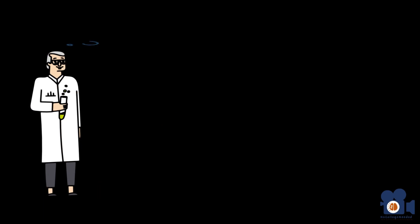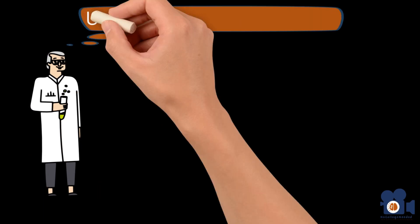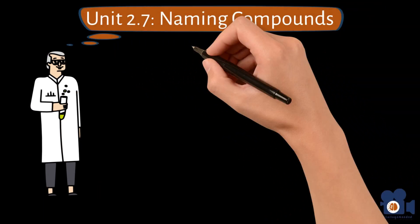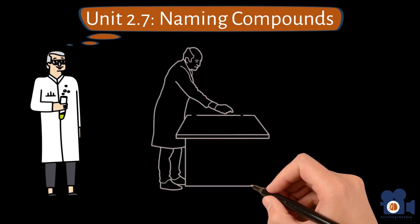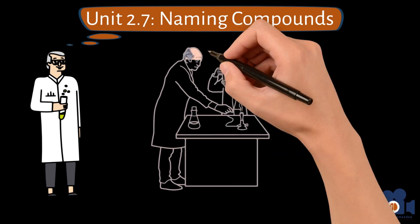Today we're delving into Unit 2.7 of the first half of general chemistry, which goes over naming compounds. Like almost everything we deal with, it's important to have a classification system to stay organized and chemists use chemical nomenclature to name chemicals.